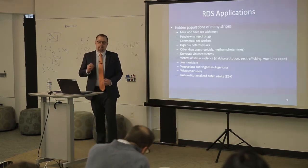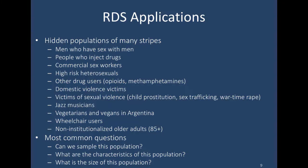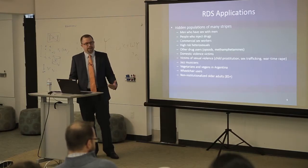People have applied RDS to a number of different populations, and I think the diversity is an exciting area. While most of the work focuses on key affected populations for HIV — like men who have sex with men, people who inject drugs, and commercial sex workers — there have been studies looking at other drug users, victims of sexual violence, and even more out-there topics like jazz musicians, wheelchair users, or vegetarians and vegans. There's been a lot of different research focused on hidden populations that are not just health-based.